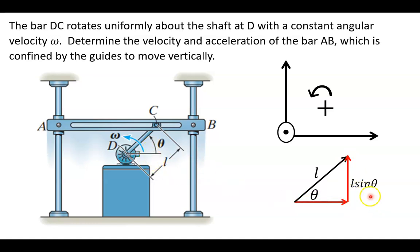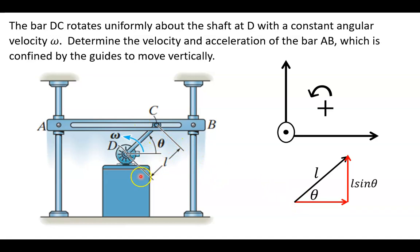As this thing goes up and down, the vertical component can be described by L times the sine of theta — the hypotenuse times the sine of theta. As theta changes, L which is a constant won't change, but this vertical Y component is going to be constantly changing as well.